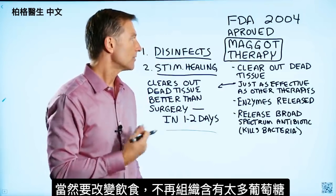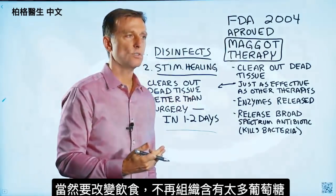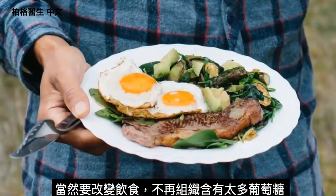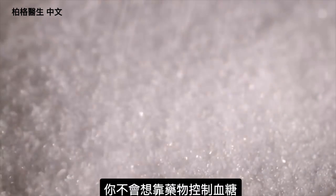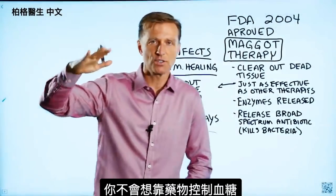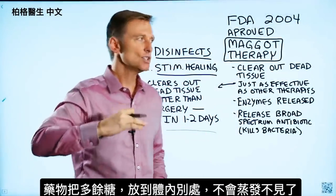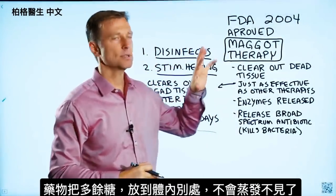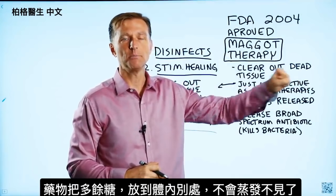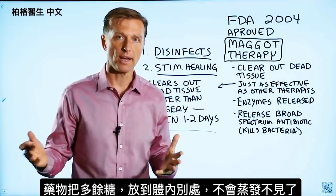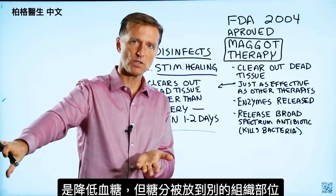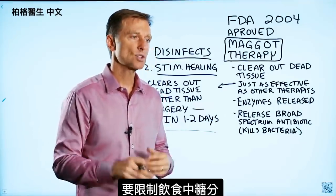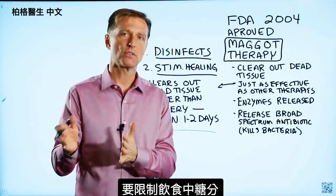Of course, you would want to make sure that you change your diet so you don't keep exposing these tissues to glucose. You don't want to just rely on medication to control your blood sugars. Medication basically takes the excess blood sugar and has to put it somewhere — it doesn't evaporate. It lowers it, but it puts it somewhere in the tissues. We want to actually eliminate the sugar from the diet.